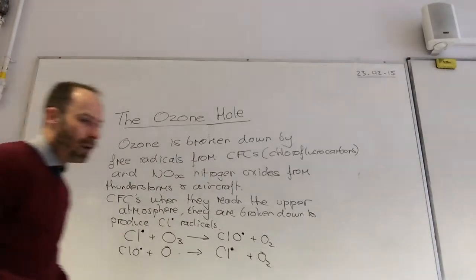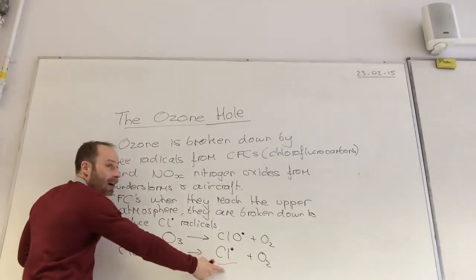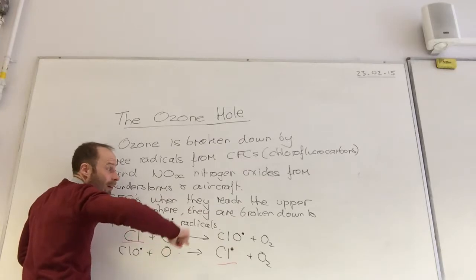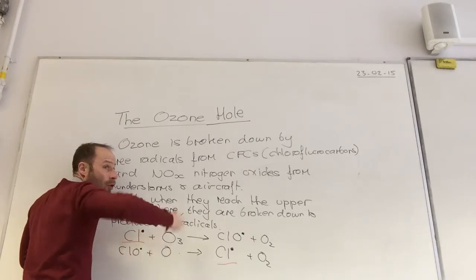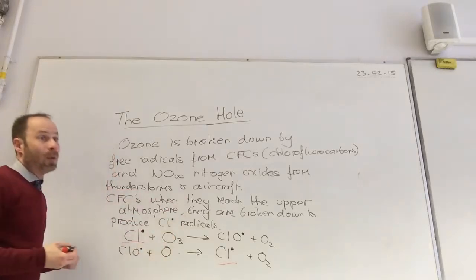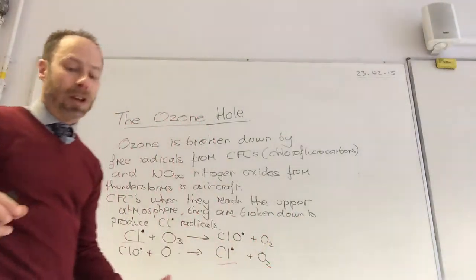So, wow. What have I done? I have reformed Cl. So it cycles through there. So one chlorine free radical could destroy hundreds of ozone molecules because it just keeps cycling through. Which is why it's so dangerous. Why it's so powerful at breaking down ozone.